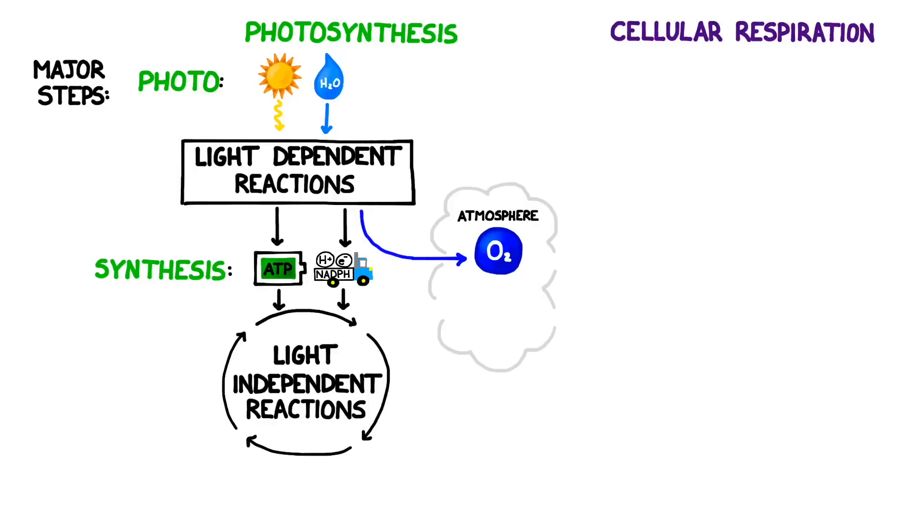The light independent reactions perform a process called carbon fixation where they take carbon from carbon dioxide in the atmosphere and transform it into a sugar. The sugar produces a three carbon molecule called PGAL and it's essentially half a glucose molecule.